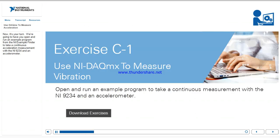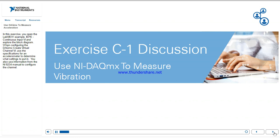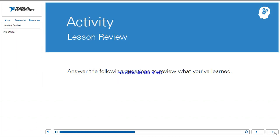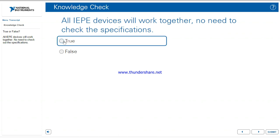Now it's your turn. We're going to have you open and run an example program from the NI Example Finder to take a continuous acceleration measurement with the NI-9234 and an accelerometer. You'll open the LabVIEW example IEPE continuous input VI and explore the block diagram. When configuring the DAQmx Create Virtual Channel VI, you use the specifications for an accelerometer to determine the correct settings, and you'll also use information from the NI-9234 manual to configure the channel. True or false: all IEPE devices will work together with no need to check out the specifications?